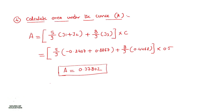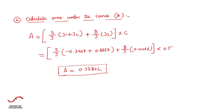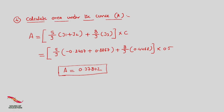This is how you solve a numerical using the Gauss quadrature 3-point method. Both Gauss quadrature 2-point and 3-point methods are very easy — you can solve any numerical using the same steps in the same way. I hope this method is now clear. If you have any doubts, you can ask in the comment box. Thank you for this session.